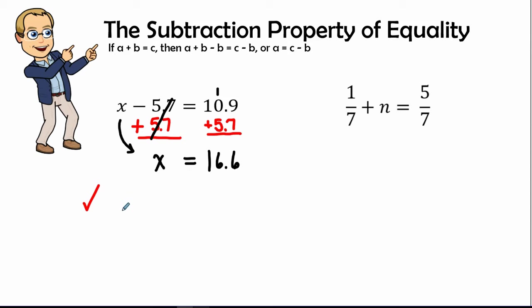It's going to subtract 5.7, and that should equal 10.9. Off to the side, I can calculate 16.6 minus 5.7.